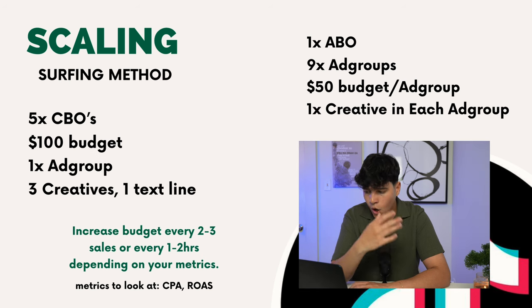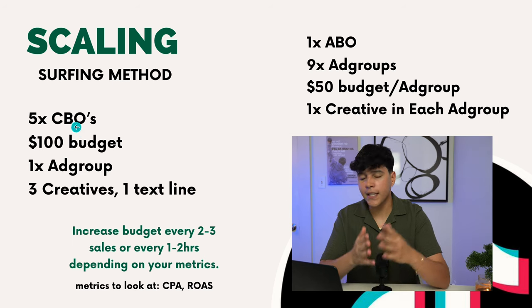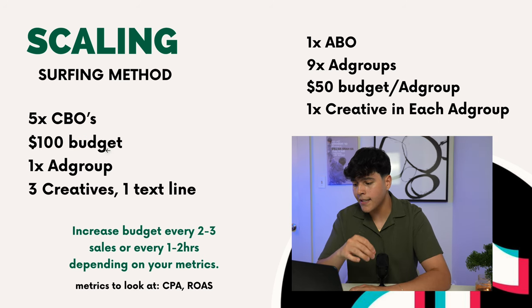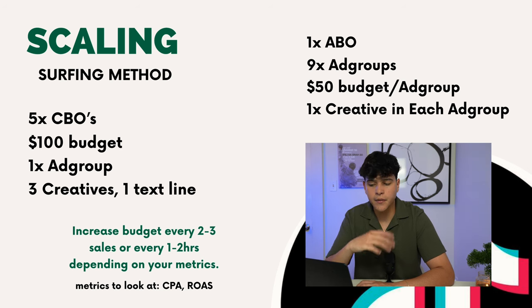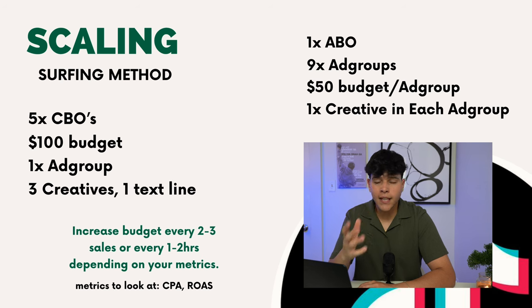The product was working really well so I scaled within a day and a half. For scaling, I did five CBOs at a $100 budget, one ad group, and three creatives — taking the best three from testing. For the ABO at scale, I did nine ad groups with one creative each at a $50 budget per ad group. I had three winning creatives, so I did three ad groups per creative. When scaling I use the surfing method — increasing the budget every two to three sales or every one to one and a half hours.